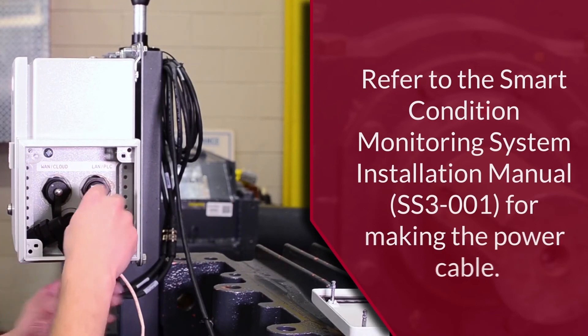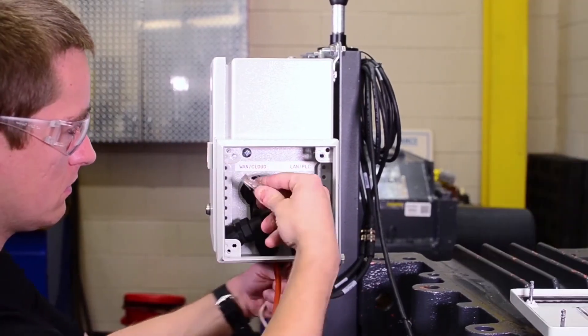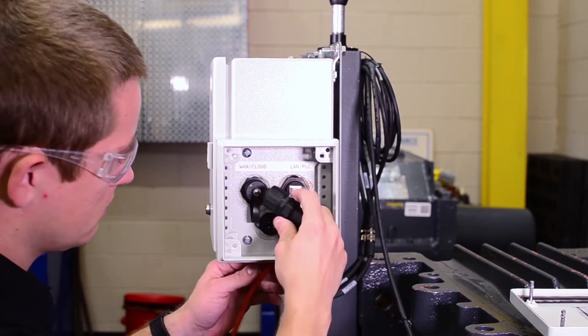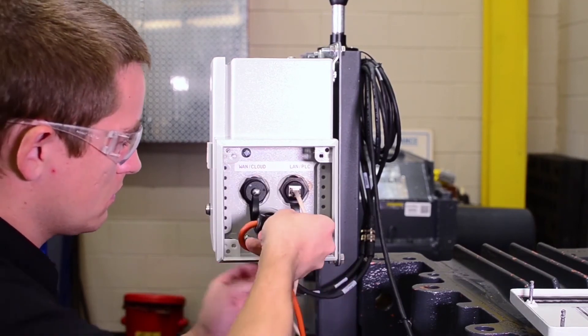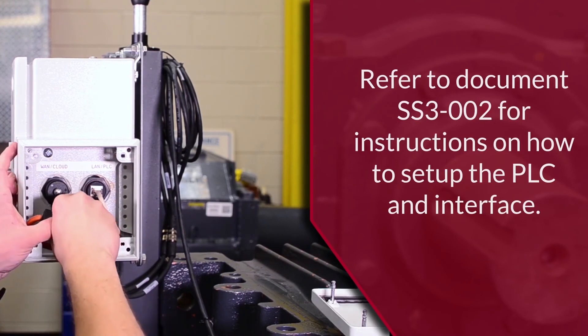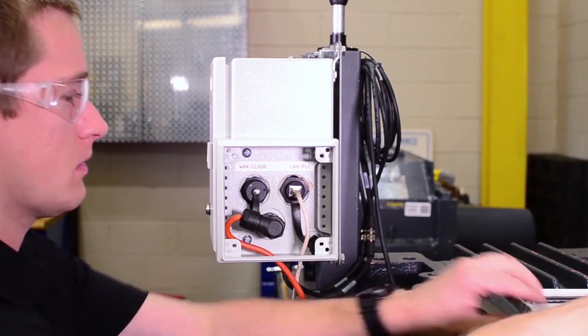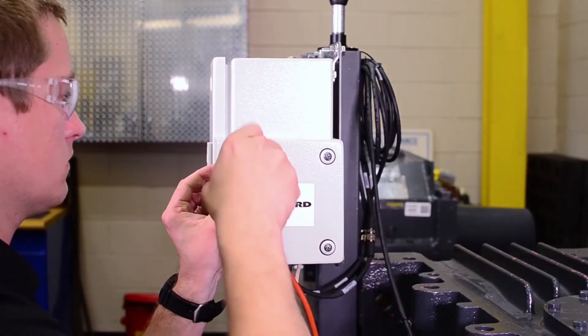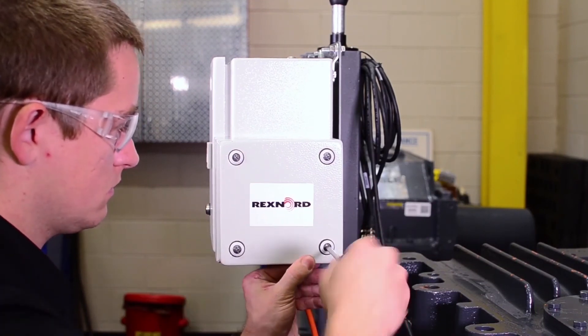Connect the PLC to the edge device using the RJ45 cable and plug it into the LAN/PLC port on the right side. Attach the power cable by aligning the key and pressing the connector into the bulkhead. Turn the hand nut until the connector is tight and fully engaged. Once the connections have been made, reinstall the cover.